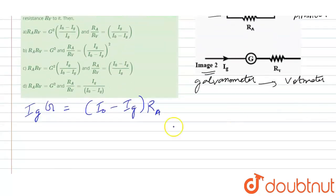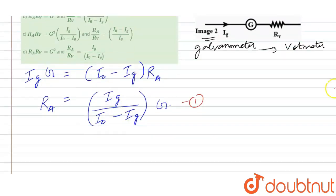This is what we will get. Now let me find out RA. Just rearrange for RA. What is RA from here? By the simple rearrangement, we will get RA is equal to IG upon I0 minus IG times capital G. So let me mark this as equation number 1. This is for galvanometer to ammeter. We have found out the relation.